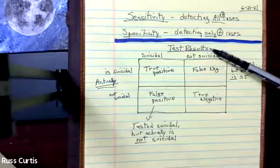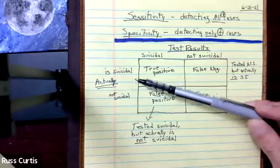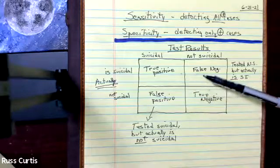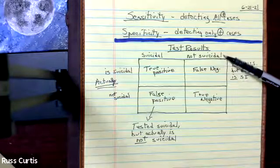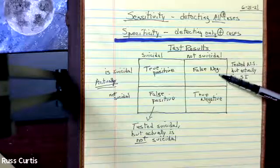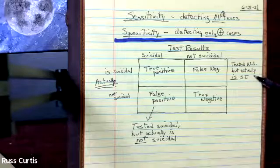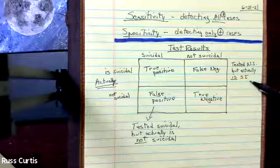But let's say the test results said that they are not suicidal, when we actually know that they are suicidal, based on the intake and interview, that would be a false negative, meaning they tested negative for suicidal ideation, but that's false. So it's just they tested not suicidal, but actually is suicidal.